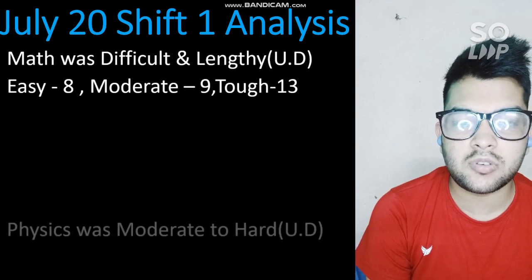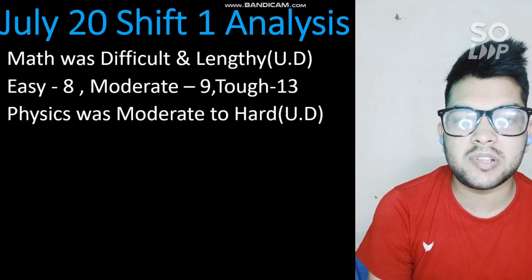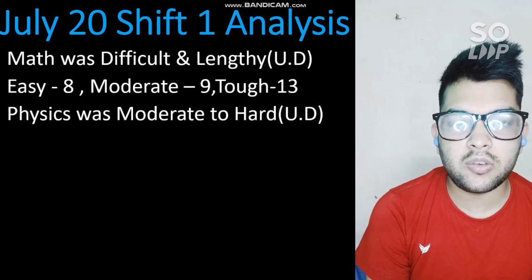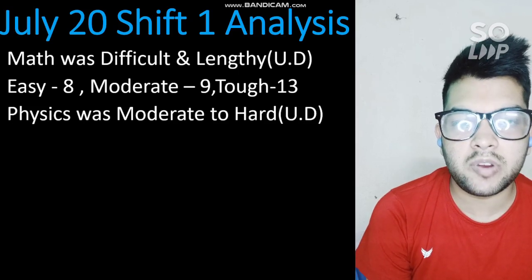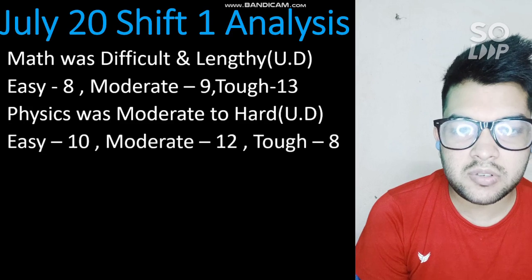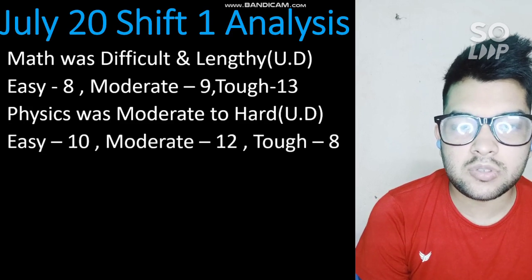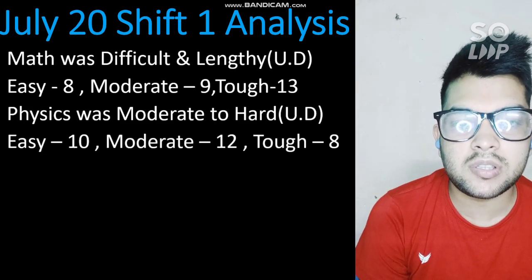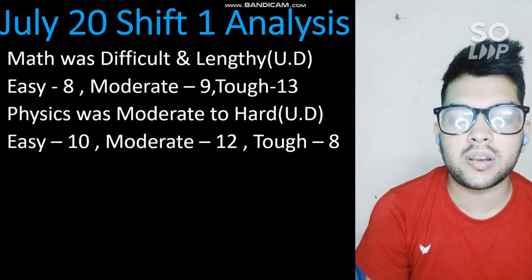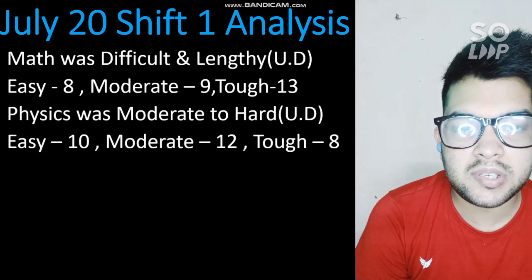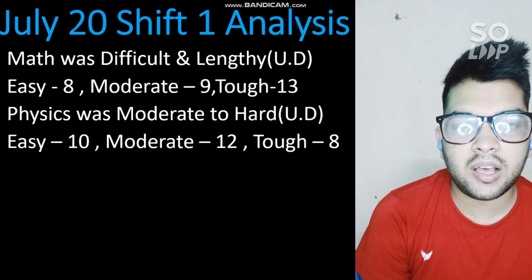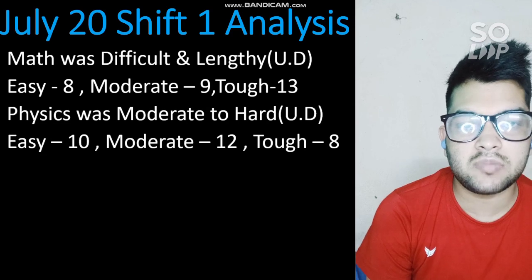Physics was moderate to hard and was also uniformly distributed — every chapter had at least one question, so you can focus on any topic you are interested in and a question will likely come from it. The number of easy questions was 10, moderate 12, and there were also tough questions. For easy questions, you can study modern physics and current electricity and alternating currents.